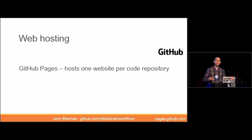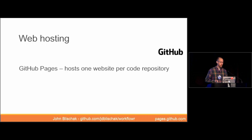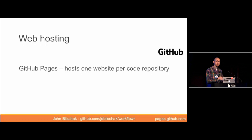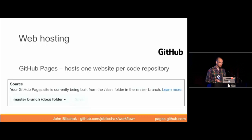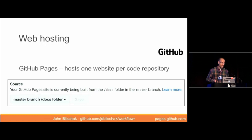Once you've created this version-controlled R Markdown website, you'll want to share it as easily as possible. Not everyone has access to a web server or wants to learn about web hosting technology. GitHub has a nice free service called GitHub Pages — for each repository of code you have, it will host a website for free, so you can have a dedicated website associated with each individual project. This can be done by clicking just a few settings, which is much easier than setting up your own web server.